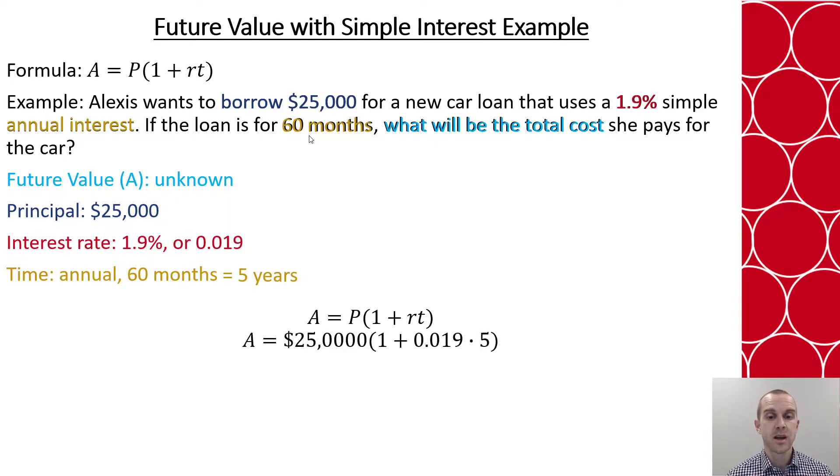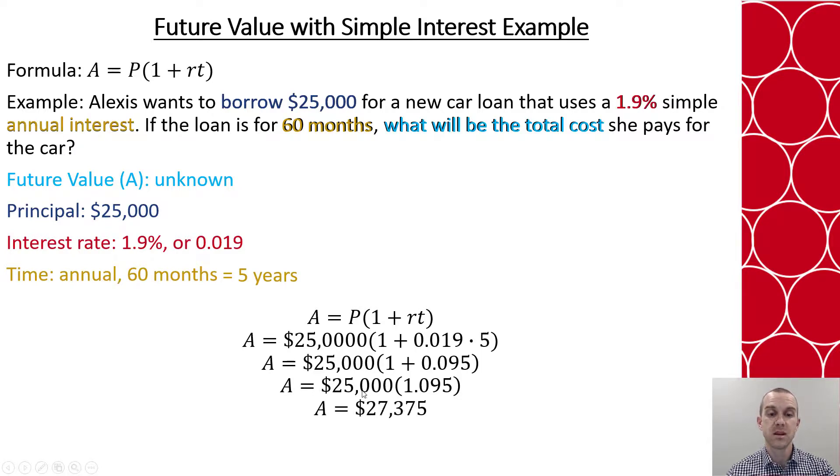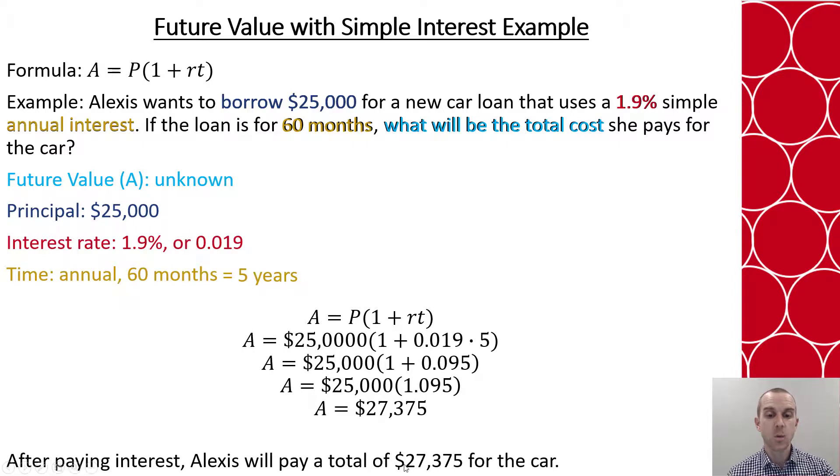So I'm going to do 25,000 times the quantity 1 plus .019 times 5. Now I need to follow my order of operations with my parentheses. I'm multiplying my parentheses first. Then I add my two values.